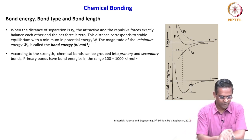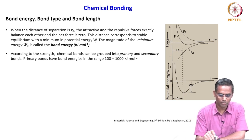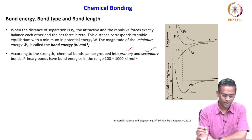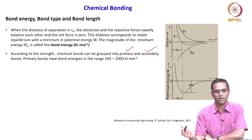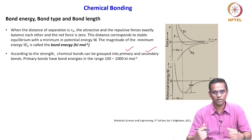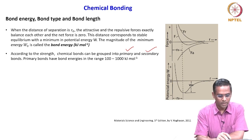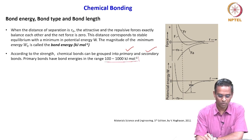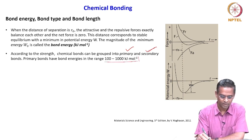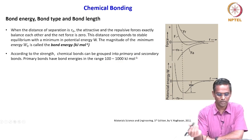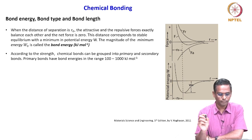According to their strength, chemical bonds can be grouped into primary and secondary. The primary bonds — ionic, covalent, metallic — have bond energies in the range of 100 to 1000 kilojoules per mole.